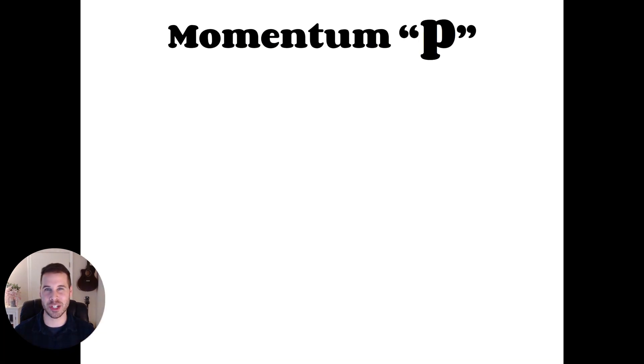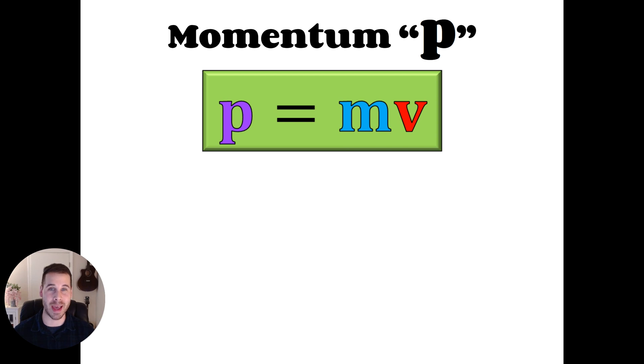So let's put together these two ideas we just discussed to figure out what determines how much momentum is in an object. Momentum is going to be symbolized with the letter P and P turns out to be equal to M times V, mass times velocity. So now we can see from those scenarios why having more mass or more velocity means you have more momentum.